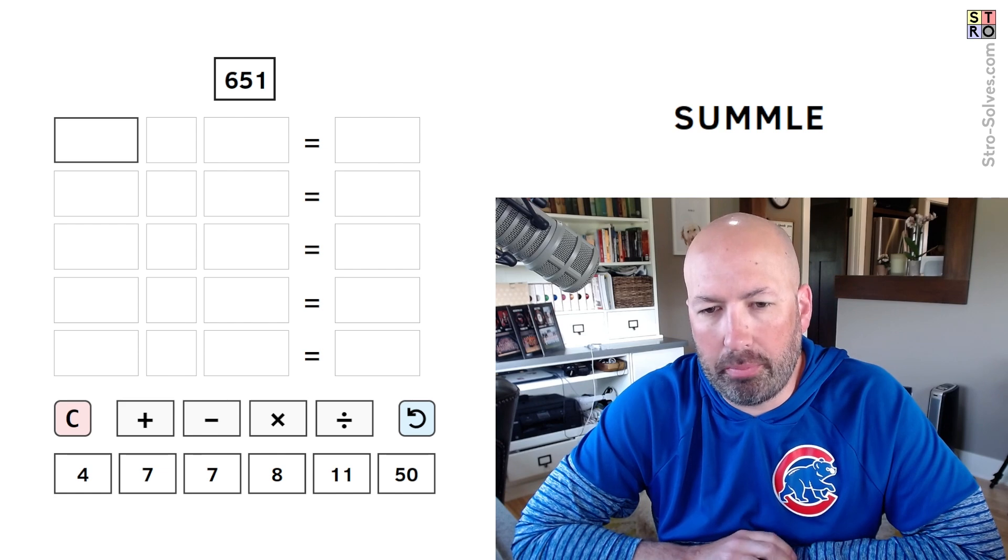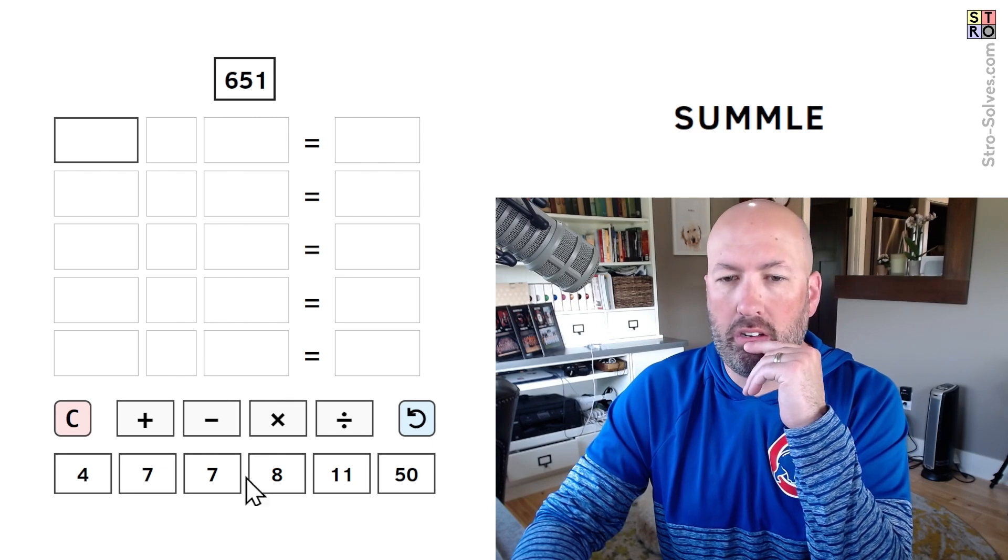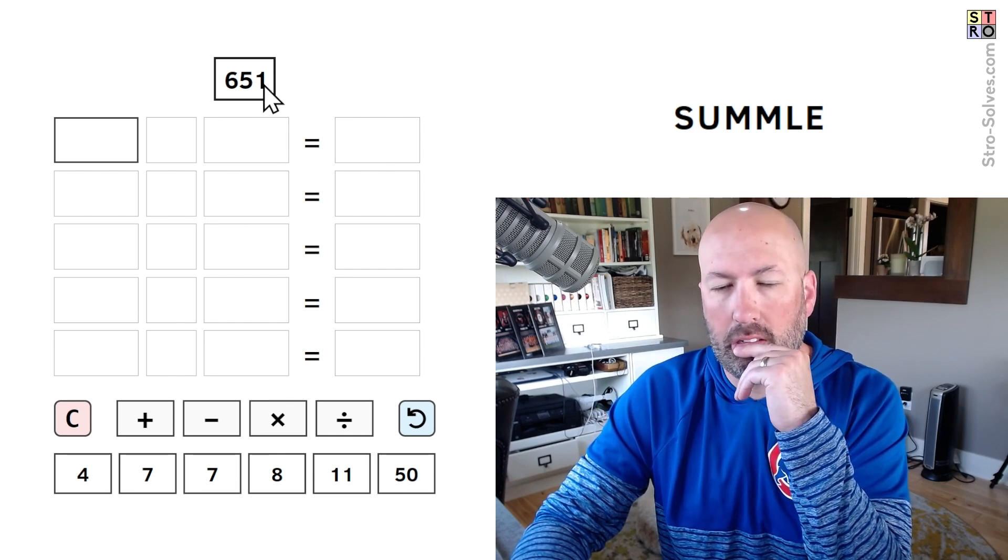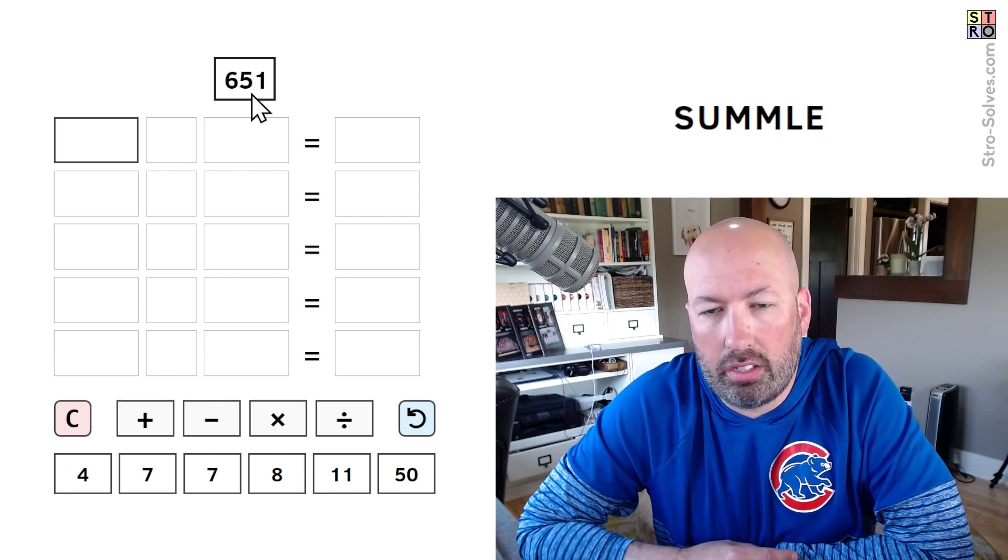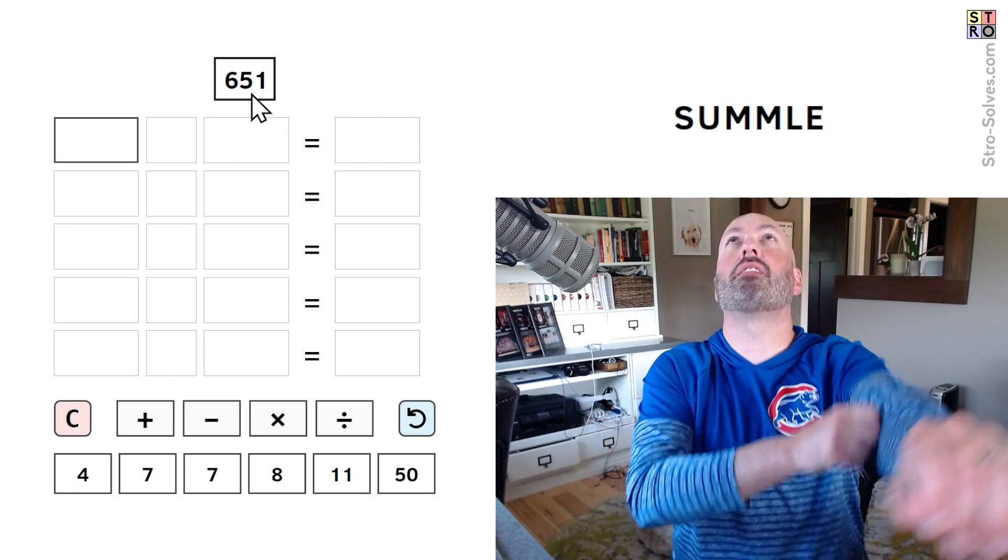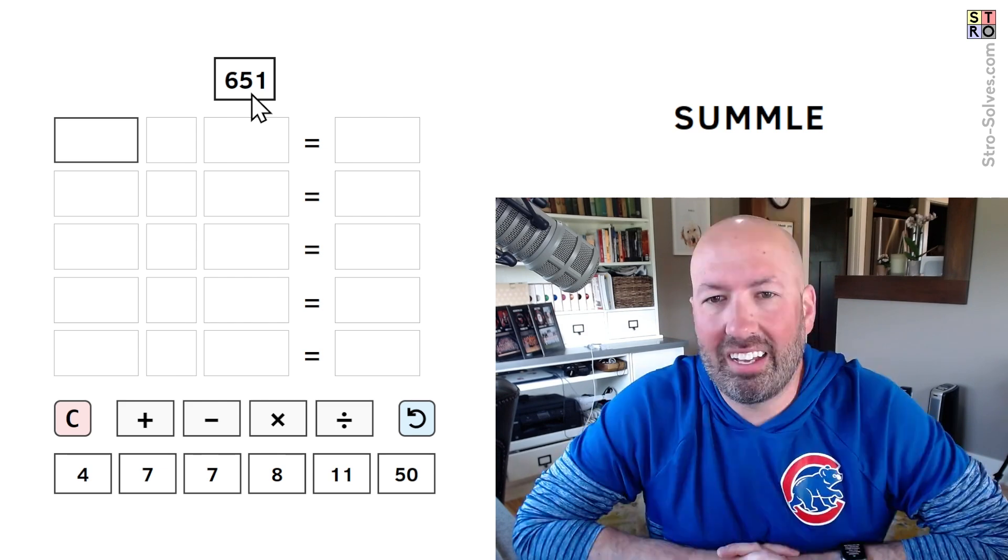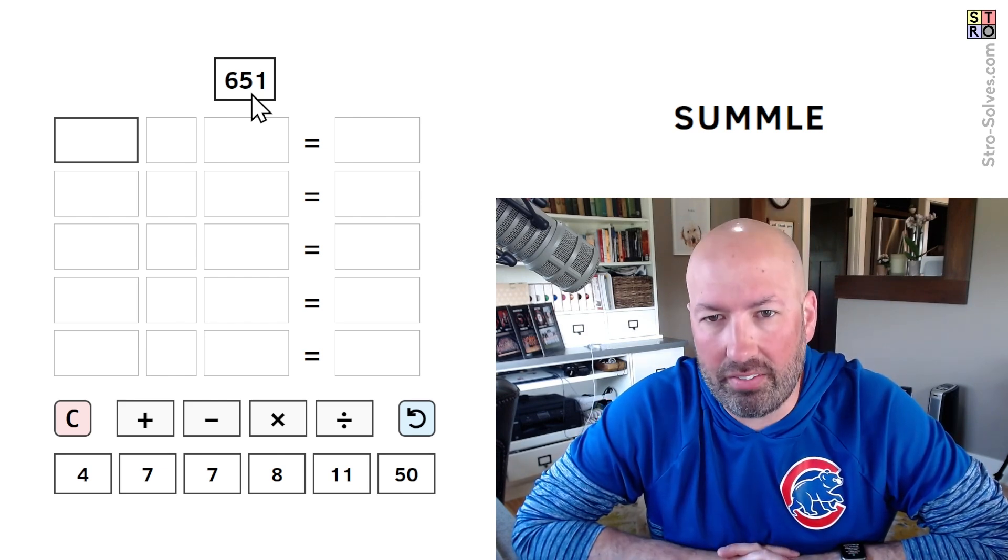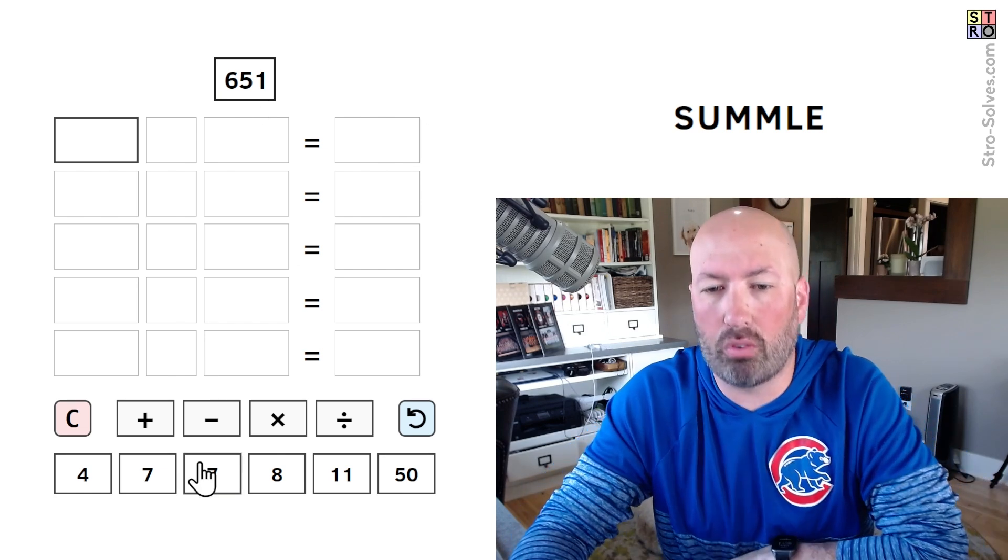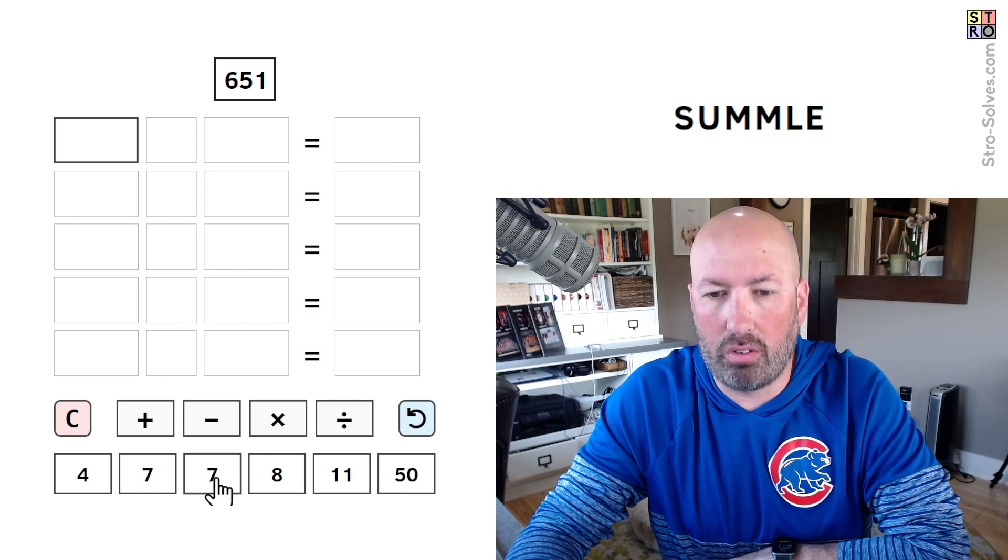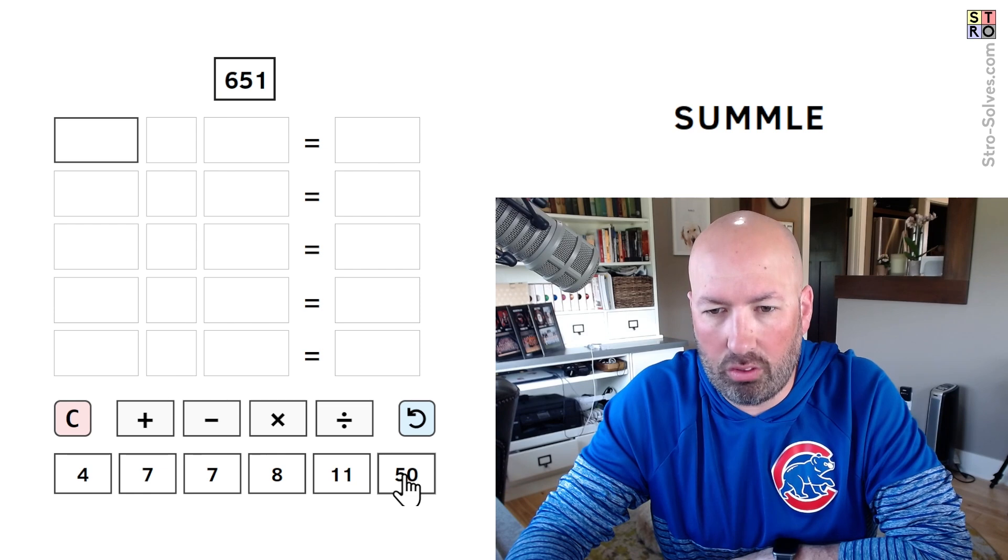You know, 3 times 217 is 651, but I wonder if 7 is a multiple. Is 7 a factor of 651? Let's see, because 100 times 7 is 700. 7 times 7 is 49, so it's 93 times 7. If we can get 93, we can multiply by 7. I bet that's what we gotta do. So, 93. How can we get to 93? We got 50. We would need 43 more. That's what it is.